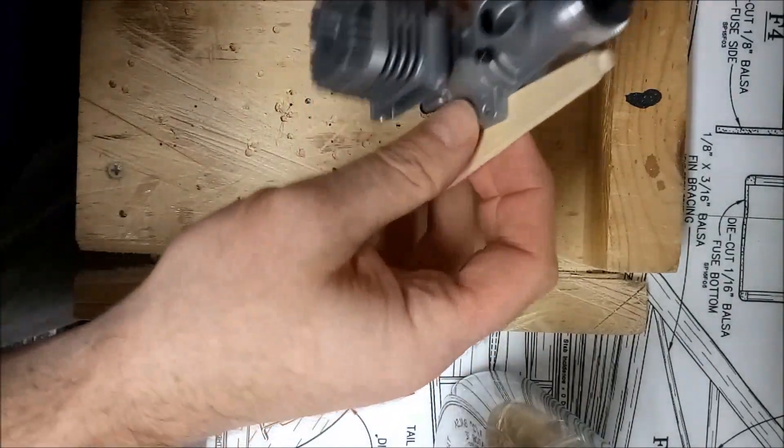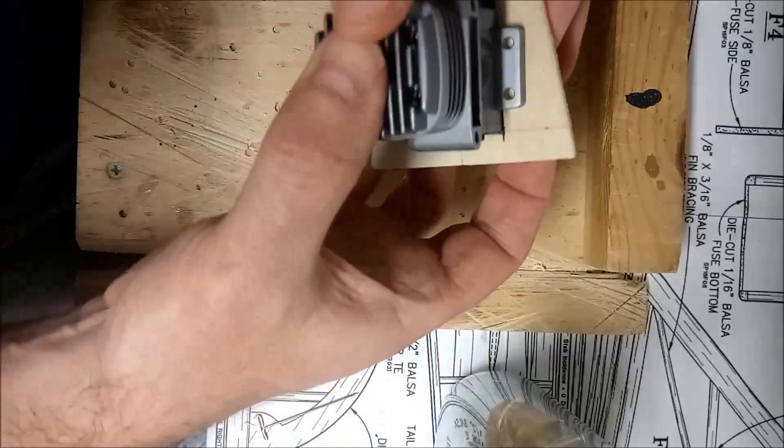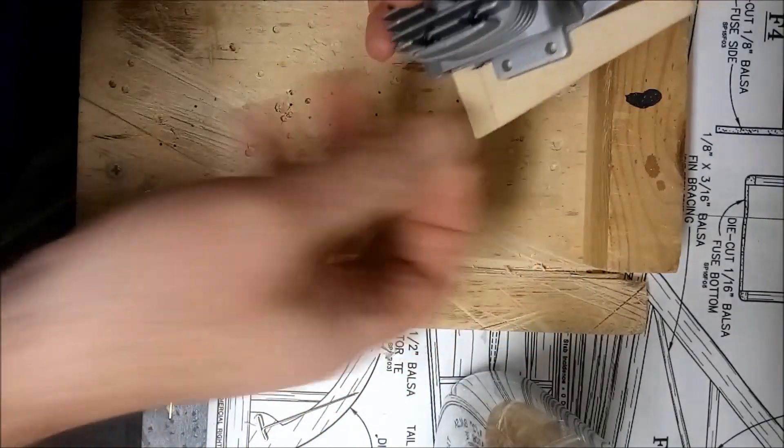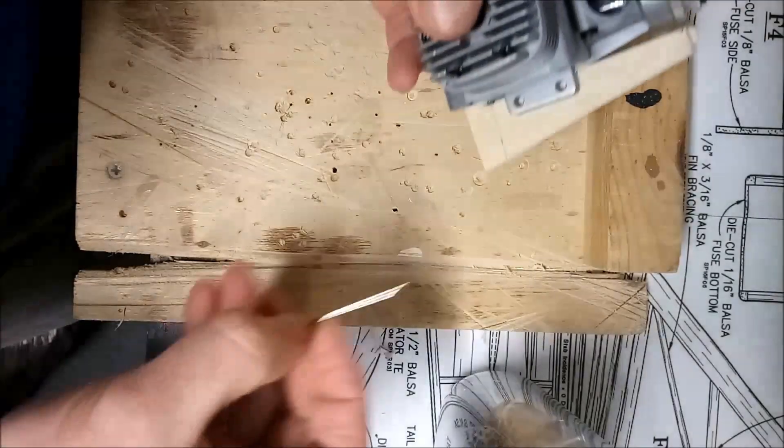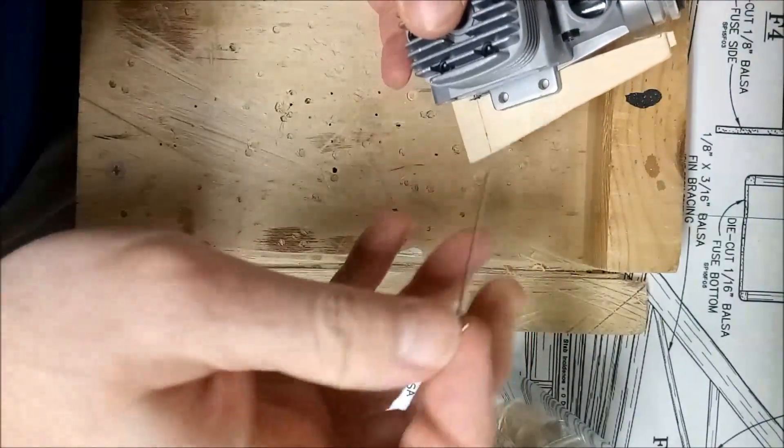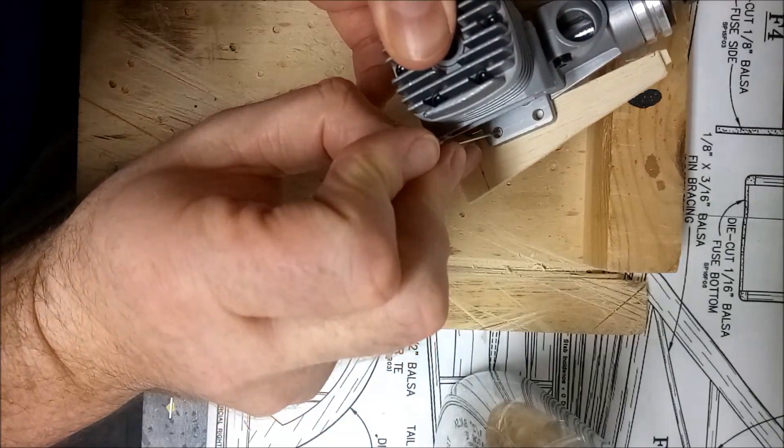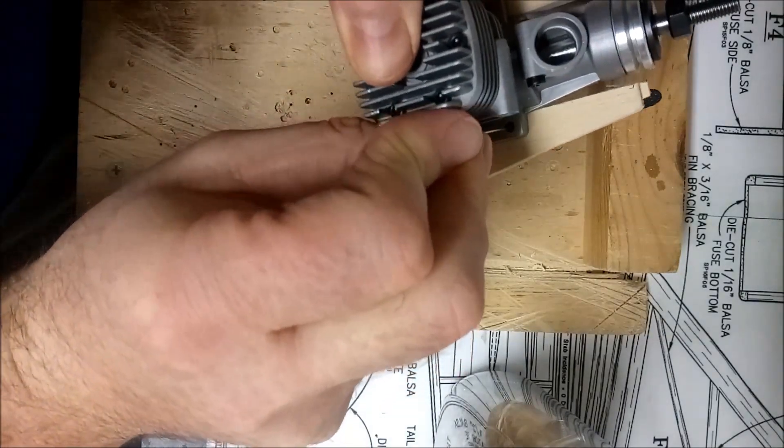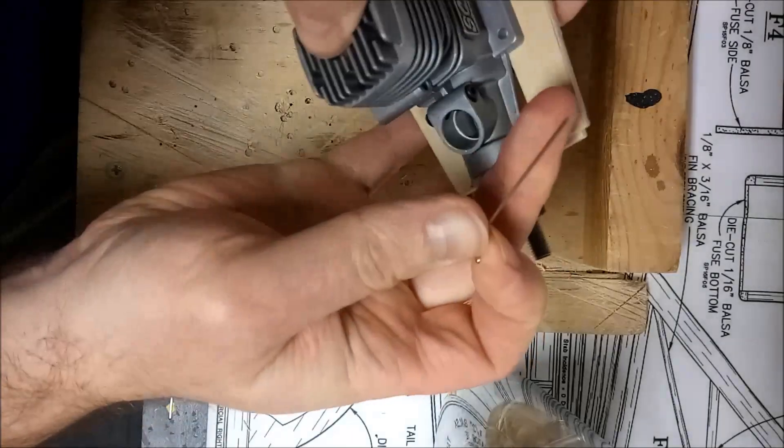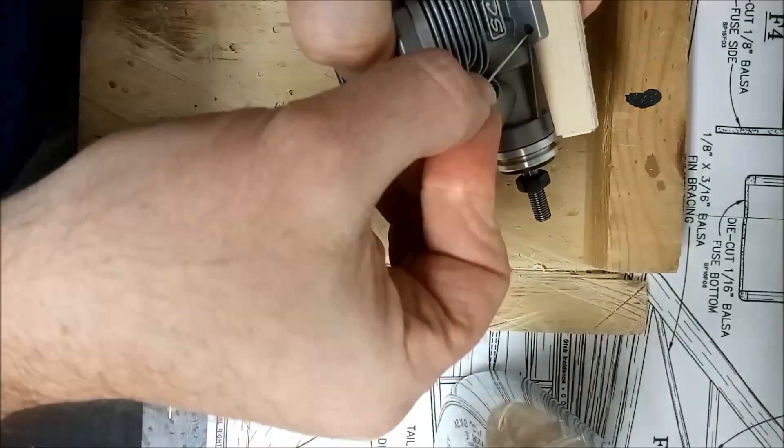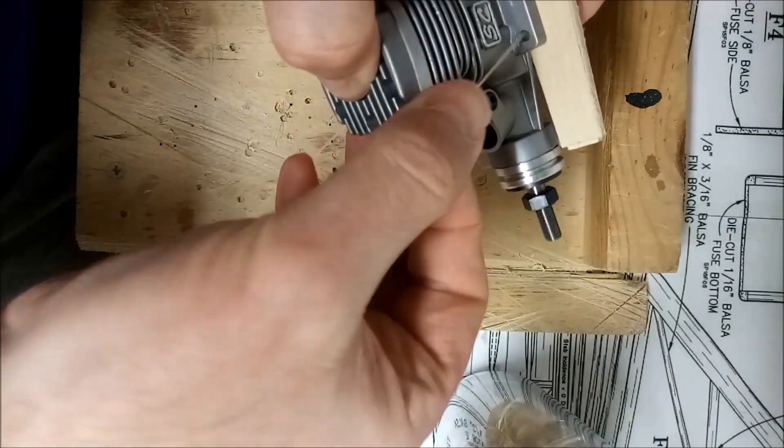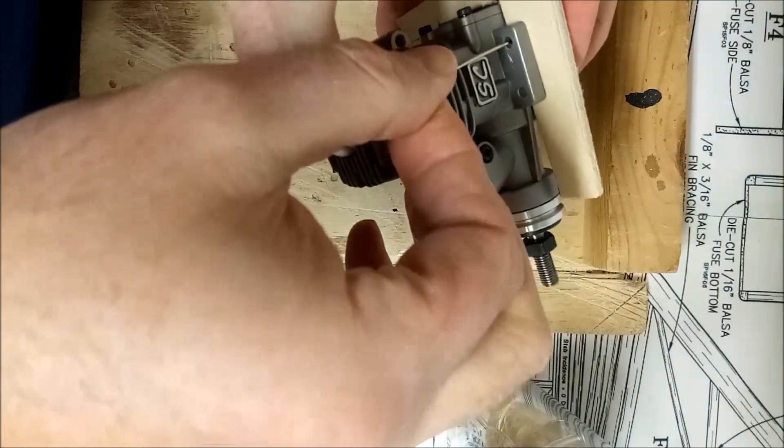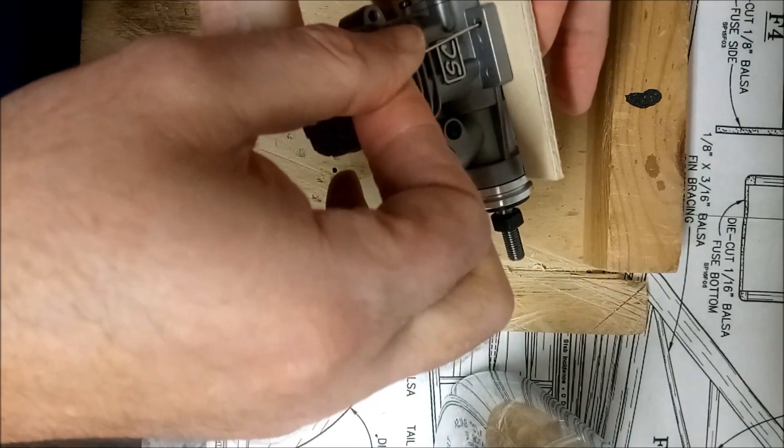The engine is now sitting nicely into the mount and what I need to do next is mark through where the bolts will go on the engine mount. So I'm just going to use a T pin and press through to make a little indent into the engine mount to show where I need to drill in order to allow the bolts to go through and to take the nuts on the opposite side.